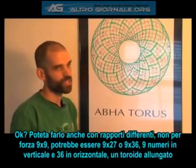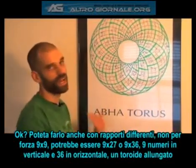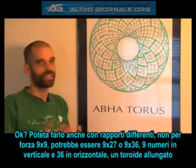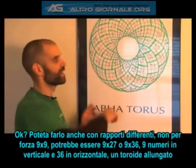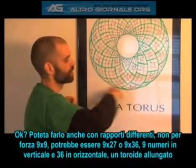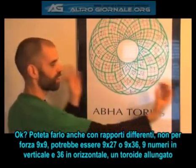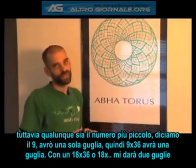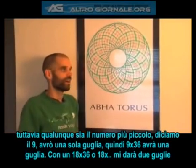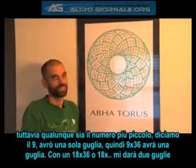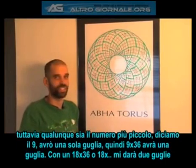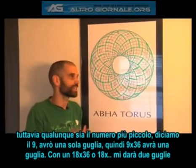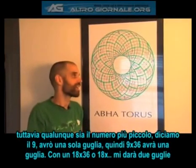You can also do them in different ratios — they don't have to be nine by nine. It could be nine by 27 or nine by 36, where you have nine numbers on the vertical but 36 across the horizontal, which would make a long narrow torus. Whatever the smallest number is — if it's nine, you're only going to have one spire. So a nine by 36 is just going to have one spire, whereas an 18 by 36 or an 18 by anything is going to have two spires.